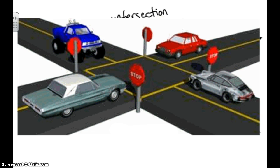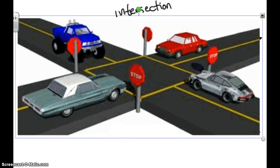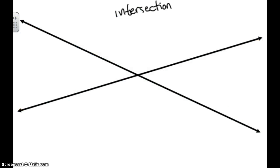An intersection is the place where two streets cross or meet. In geometry, an intersection is also the place where two things meet or cross.